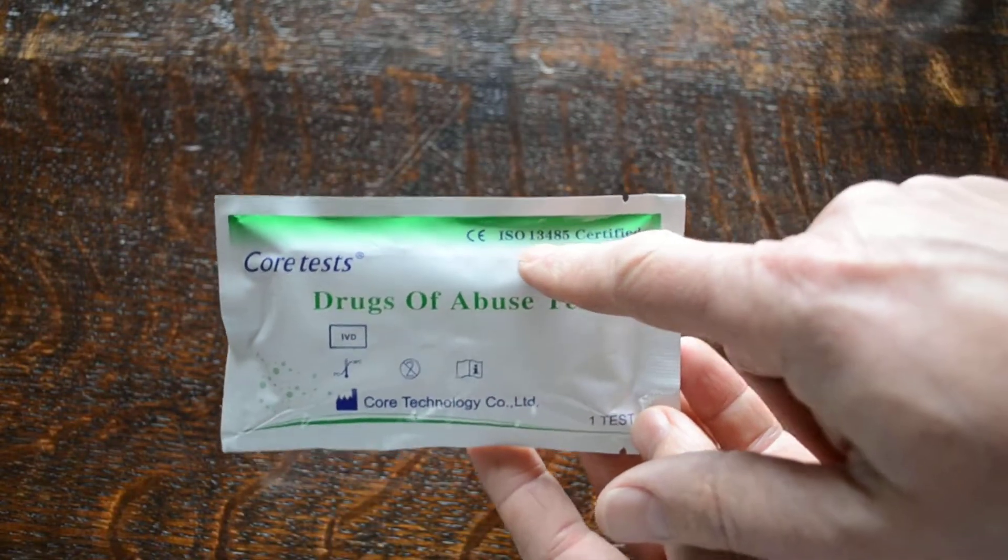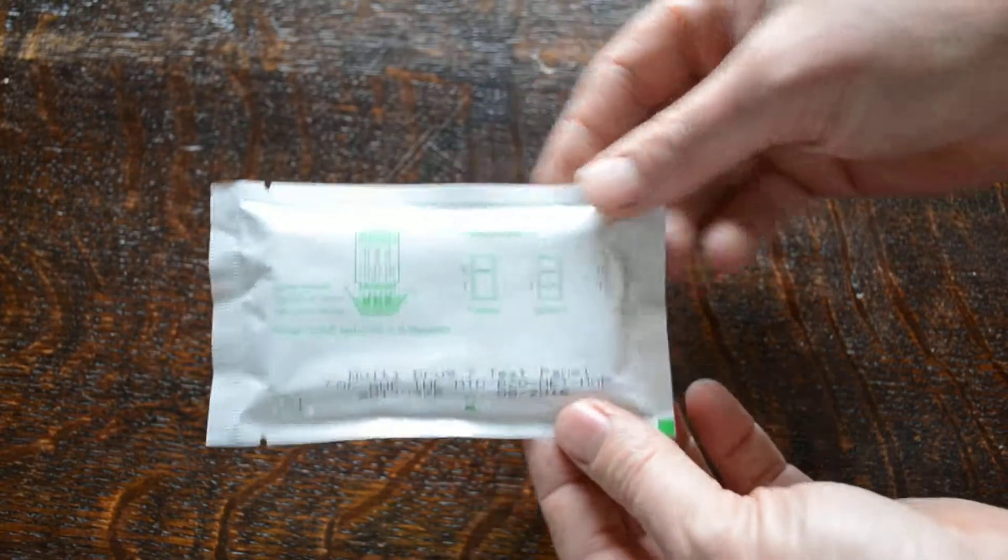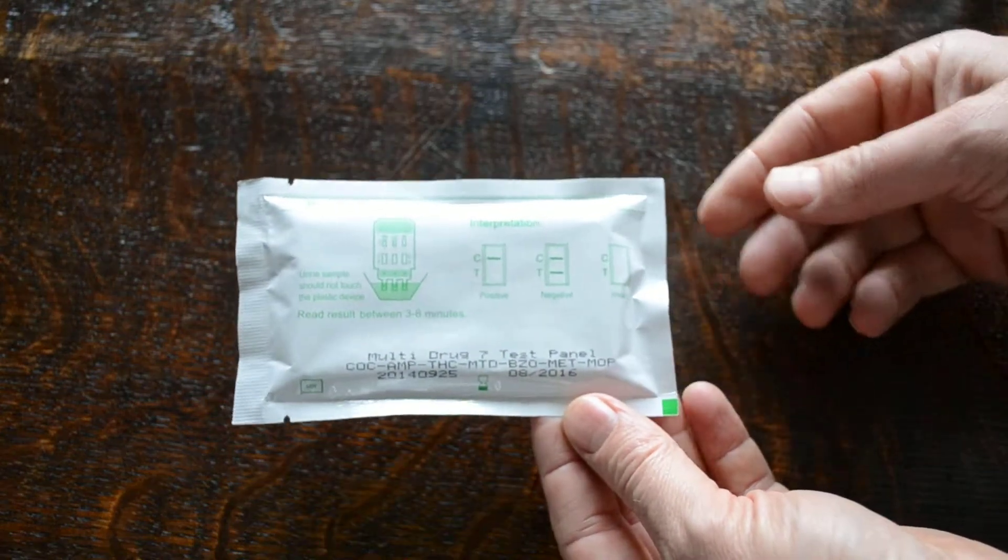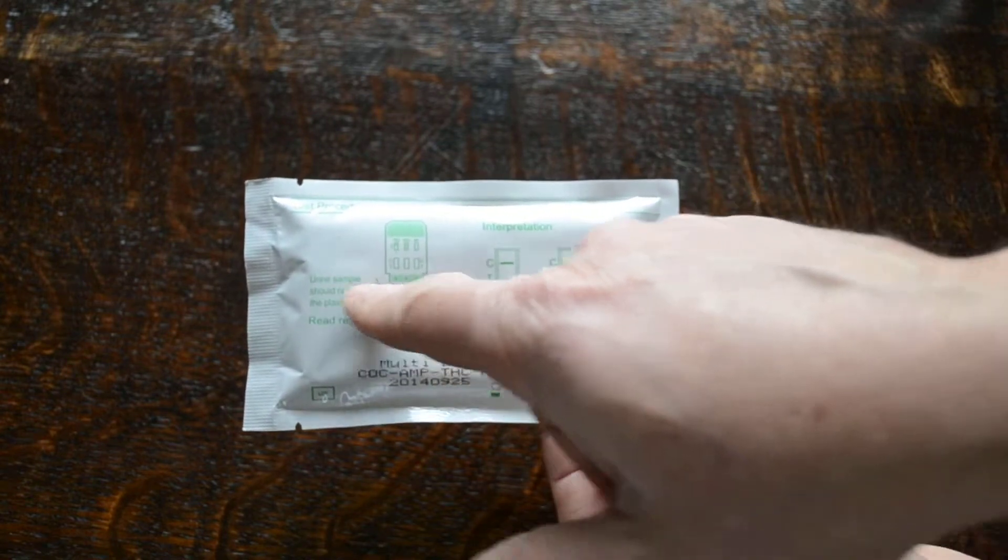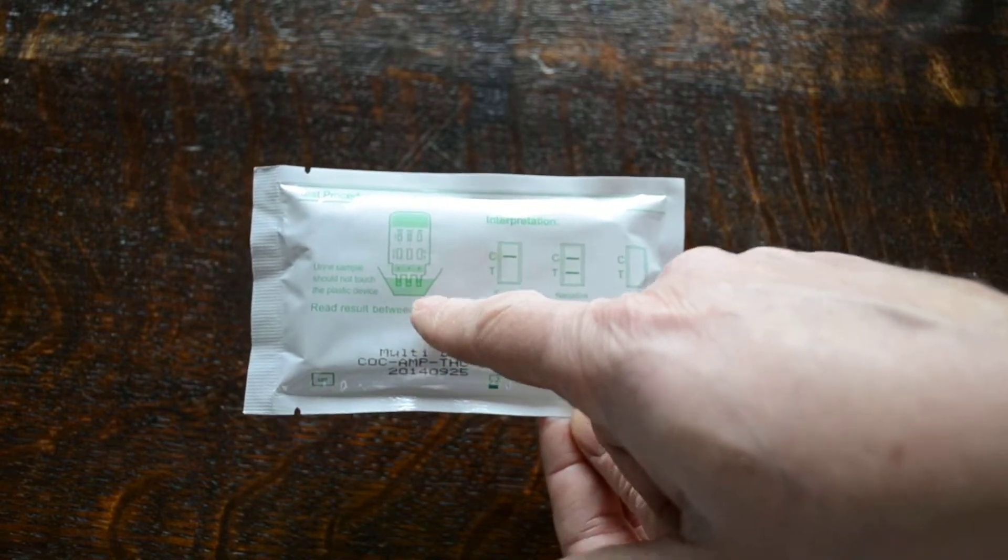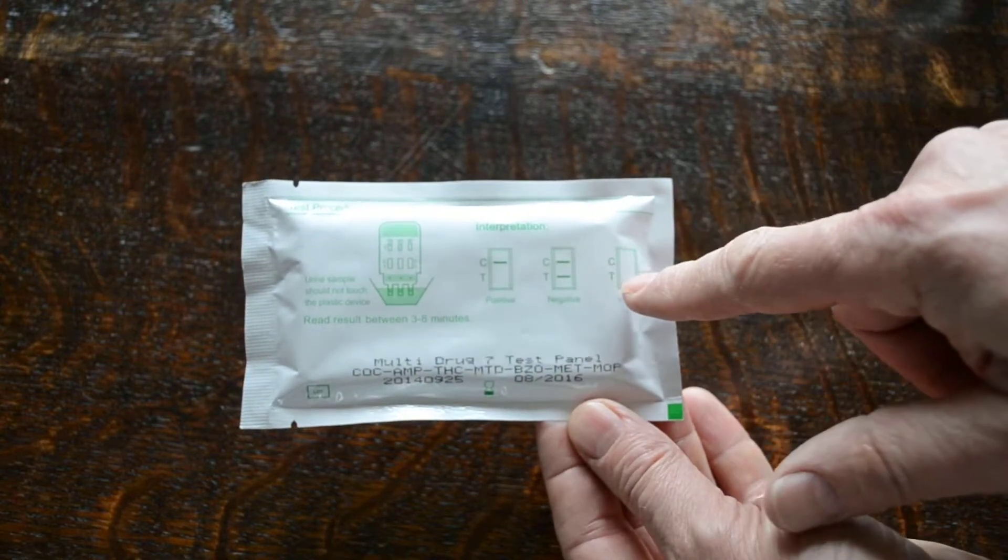CE certified and ISO 13485 quality certifications. Turn the foil over so you can see the reverse. Very nicely produced foil. Gives you basic test procedure instructions and how to dip the panel into the urine sample and indicative interpretation results.